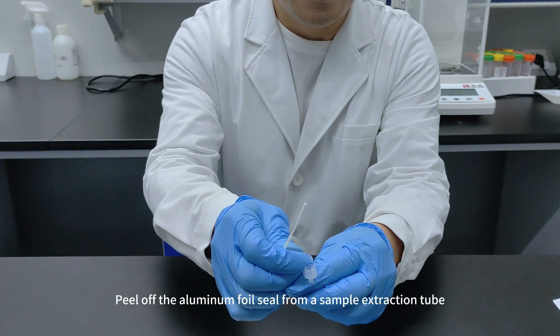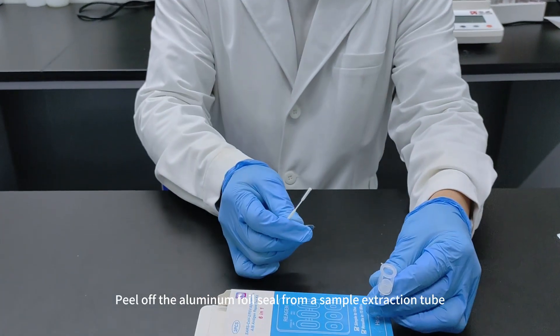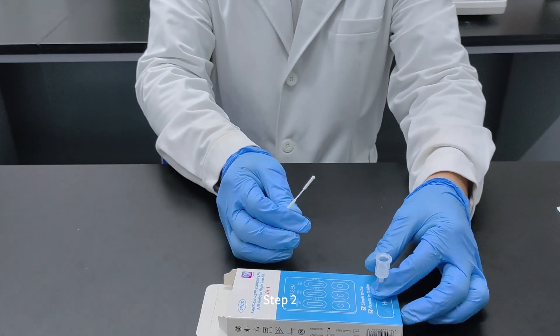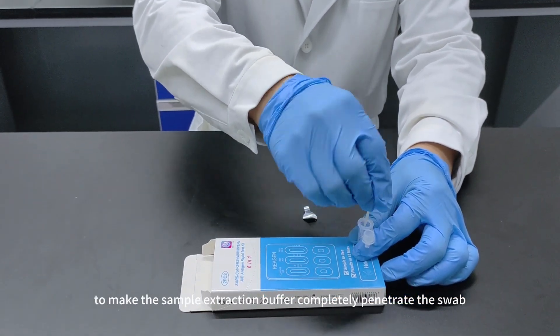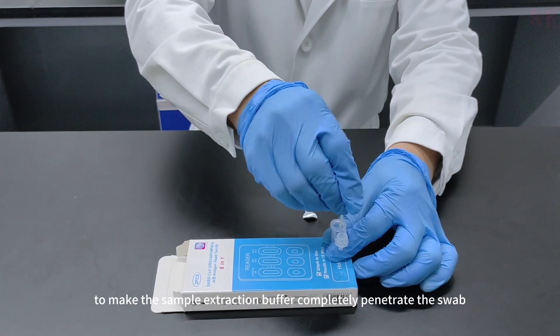Step 1: Peel off the aluminum foil seal from a sample extraction tube. Step 2: Immerse the sampled swab into the sample extraction tube to make the sample extraction buffer completely penetrate the swab.